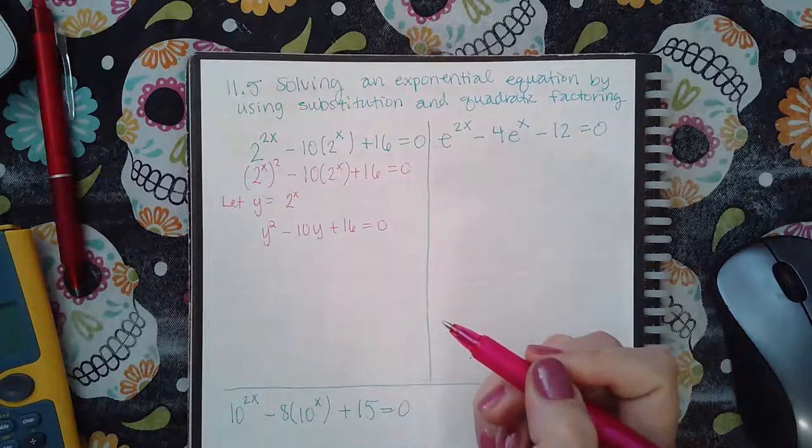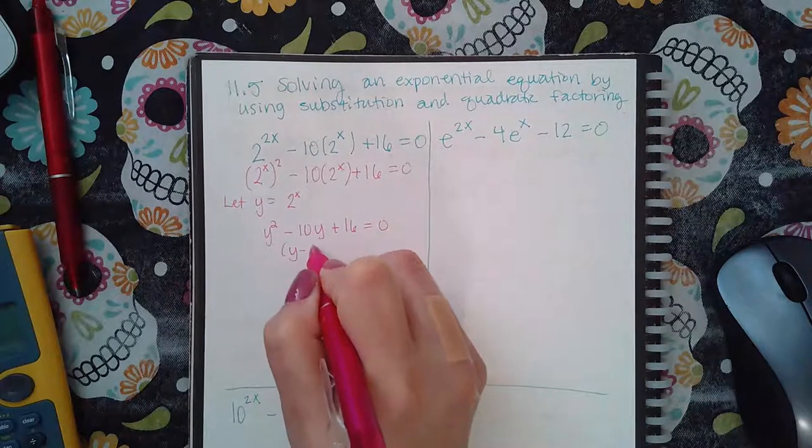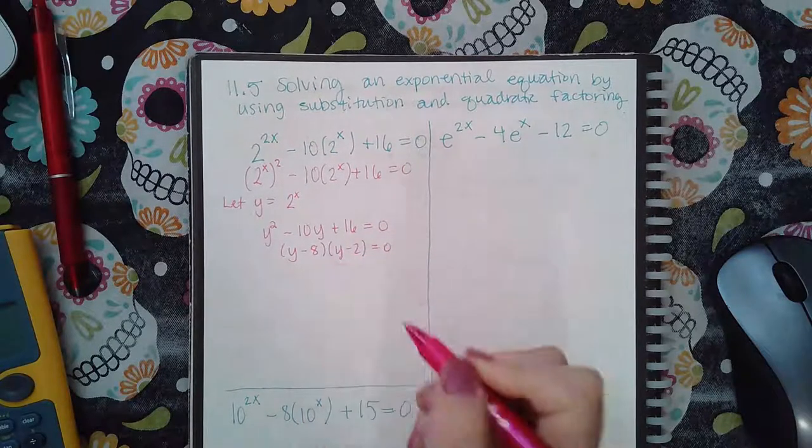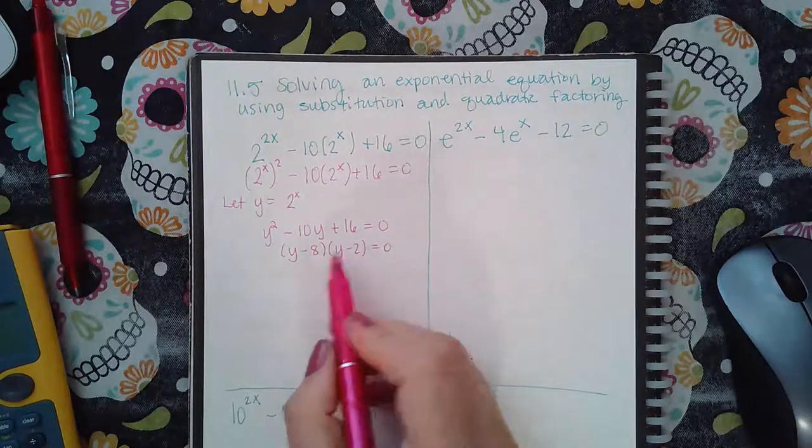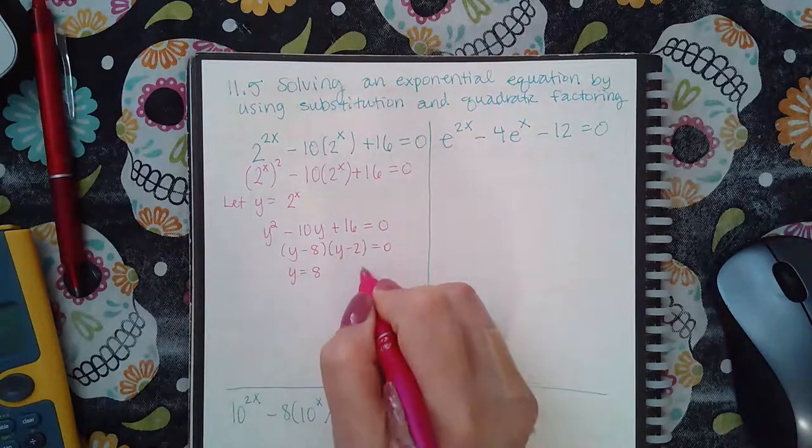Now that just looks like a regular quadratic equation, which I can solve by factoring y minus 8 and y minus 2. Those numbers will multiply to give me positive 16 and combine to give me negative 10. So y equals 8 and y equals 2.